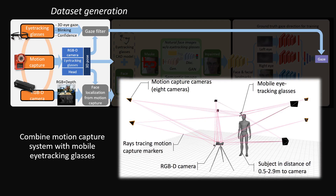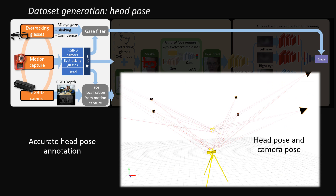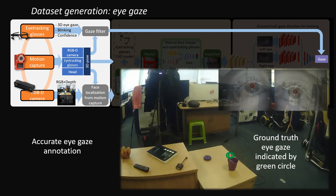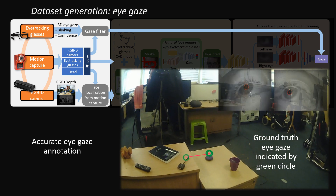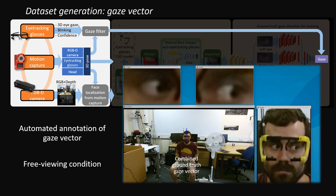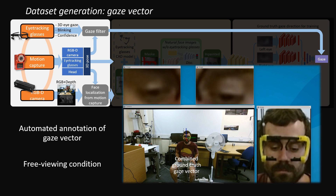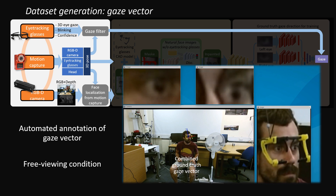Our novel approach involves combining a motion capture system used for accurate estimation of head pose with mobile eye tracking glasses that detect the pupil for eye gaze annotation. This setup provides the gaze vector in an automated manner under free viewing conditions without specifying an explicit gaze target.